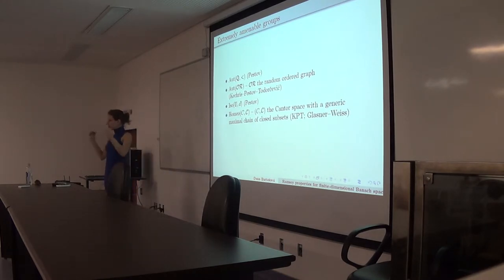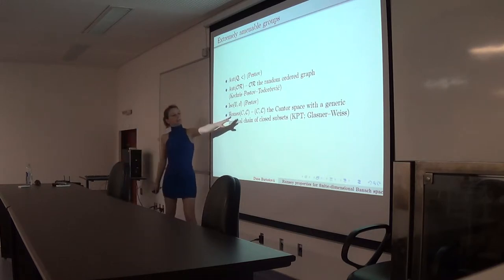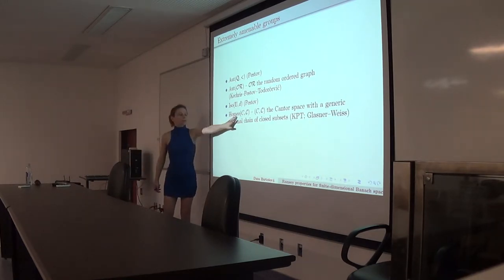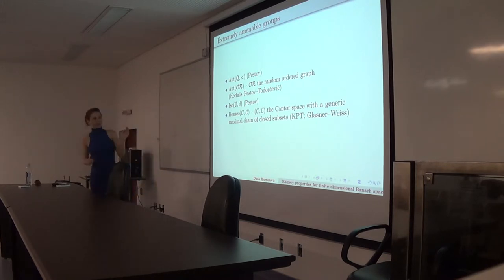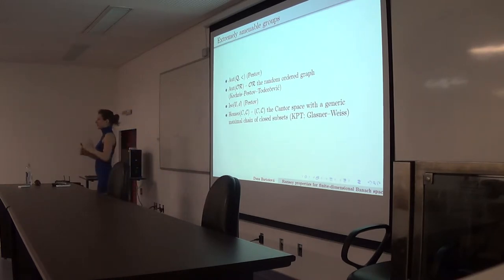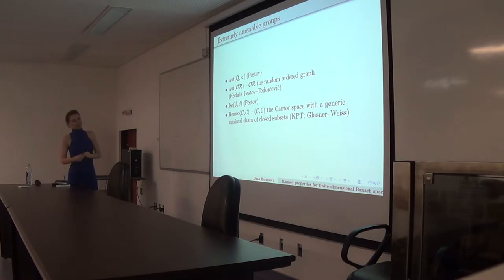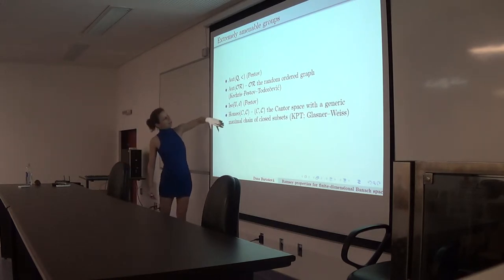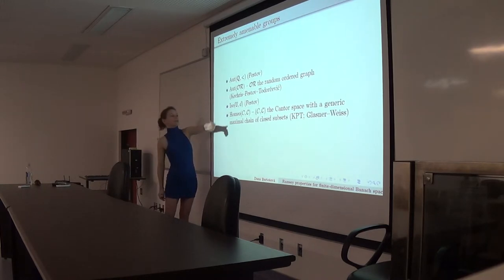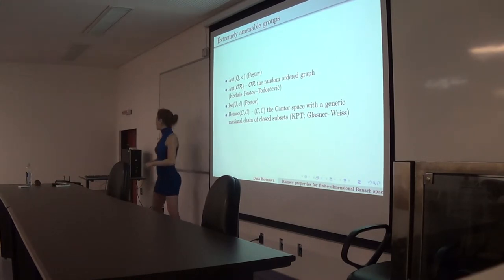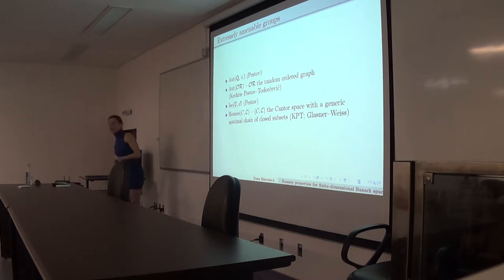However, the class of Boolean algebras is not rigid, so this doesn't directly give a fixed point. We have to rigidify — either by putting orders on the Boolean algebras, or in a more topological setting, by adding a chain of closed subsets. As a result, we get that the homeomorphism group of the Cantor set that fixes some maximal chain of closed subsets is extremely amenable. These structures have resemblances but differ: one involves automorphism groups of countable structures, one is a separable complete metric space, and one is a zero-dimensional topological structure.